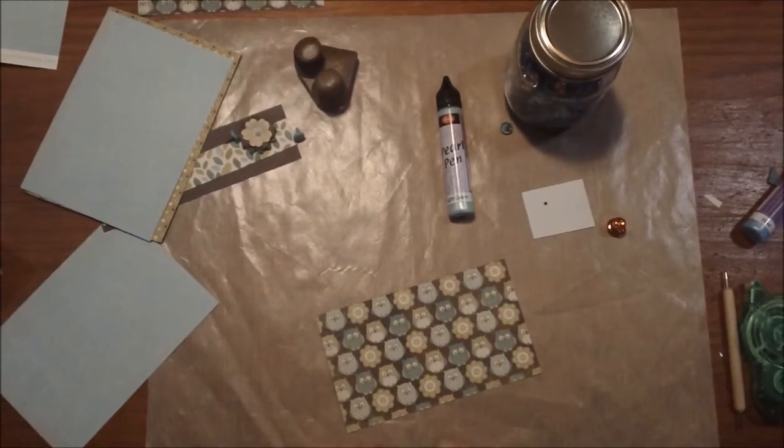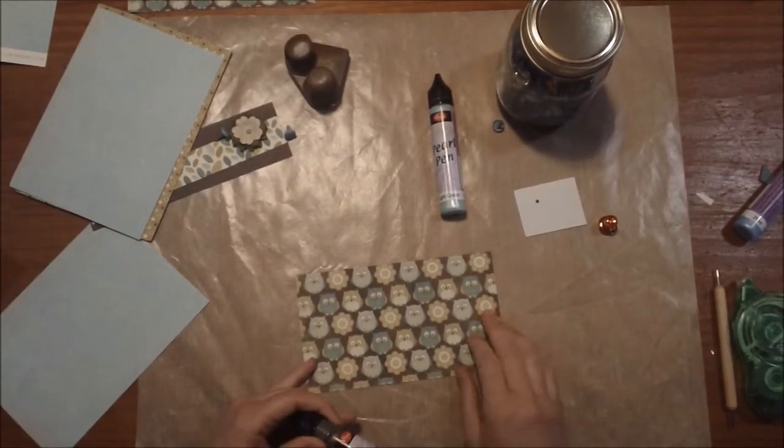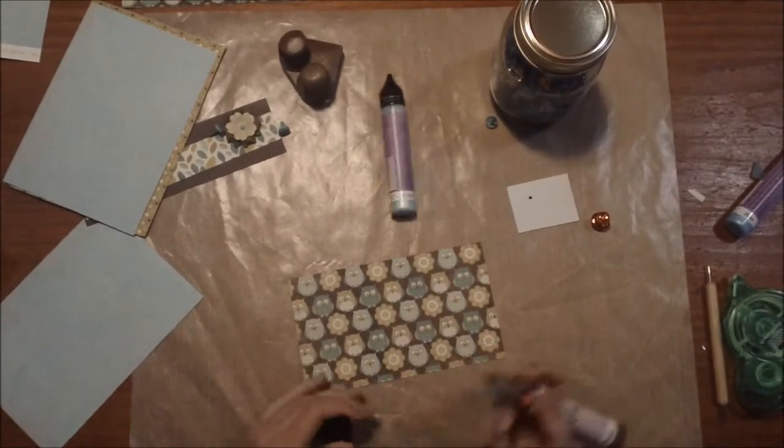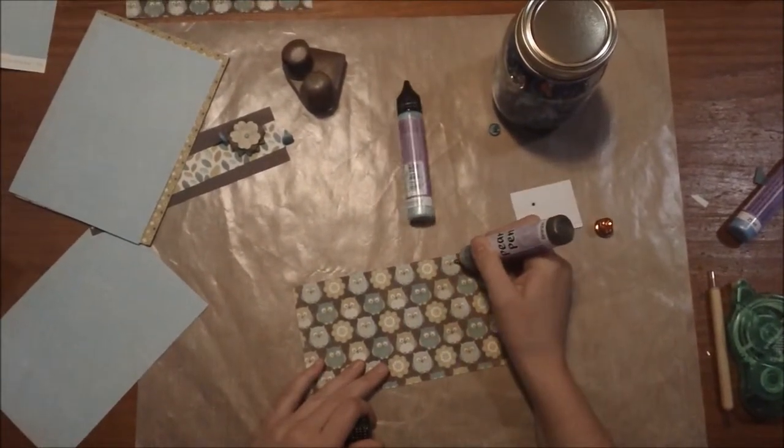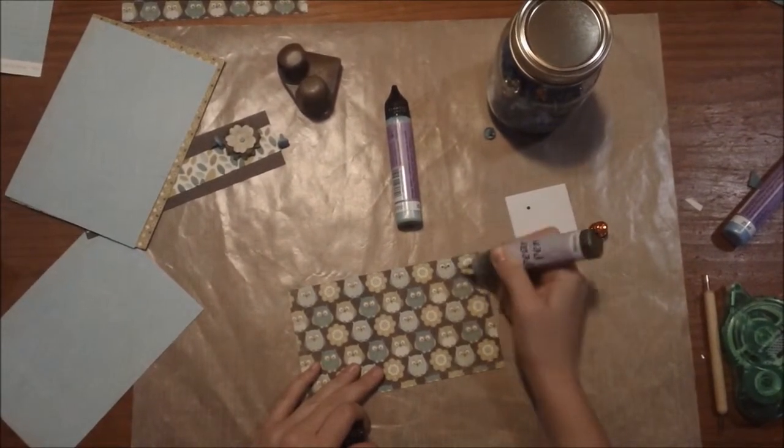So what we're going to do is add some pearl effects to different parts of our card stock here. So what I'm going to do is add it to the little owl eyes and then do some accents with the light green on some of the flowers. So I'm going to gently squeeze and do the little eyes.